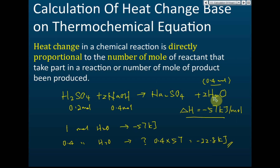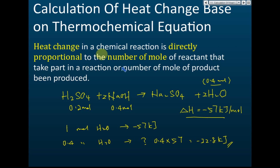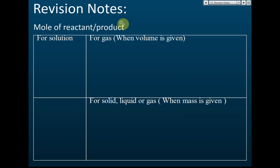The heat of reaction tells us that when one mole of water forms, 57 kJ of heat is released. The heat release is directly proportional to the number of moles — one mole gives 57 kJ, two moles gives 114 kJ, and so on. As long as you know the number of moles, you can calculate the heat change.